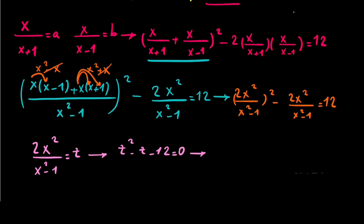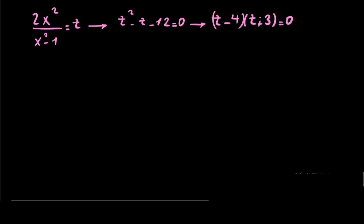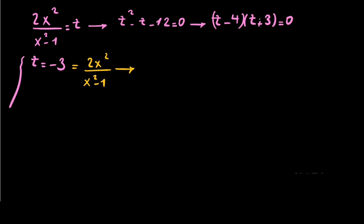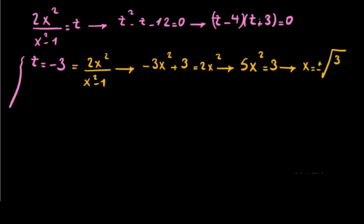So we have t squared minus t minus 12 equals 0. This factors as (t - 4)(t + 3) = 0. The first case is when t equals negative 3. Since t equals 2x squared over (x²-1), we get negative 3x squared plus 3 equals x squared, so 5x squared equals 3, giving x equals positive and negative square root of 3 over 5.